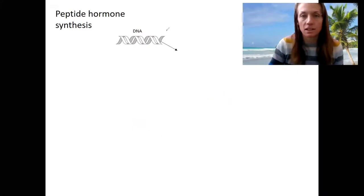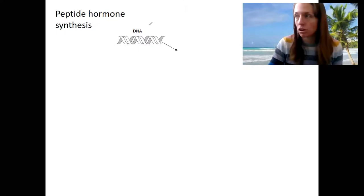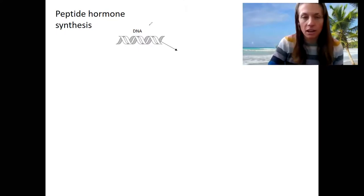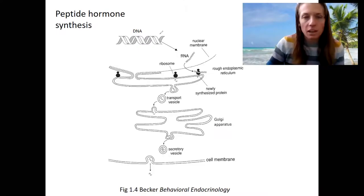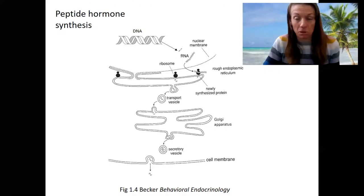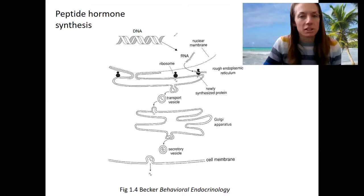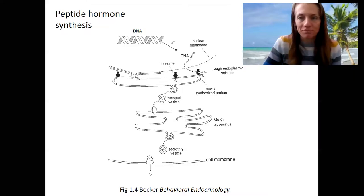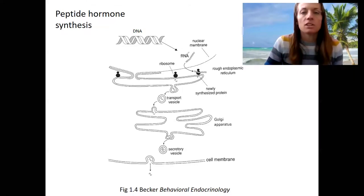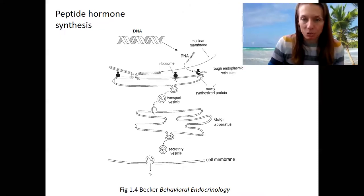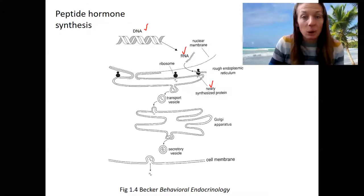So this is the synthesis process. Your DNA is inside your nucleus, of course. DNA is transcribed into RNA — this might be initiated by a steroid hormone — it's a process that happens in your body all the time. So this RNA is then going to be made into a protein. DNA, RNA, protein, just like usual.